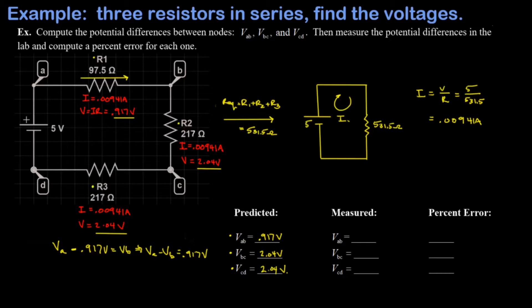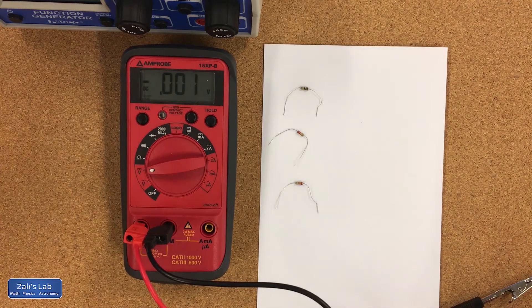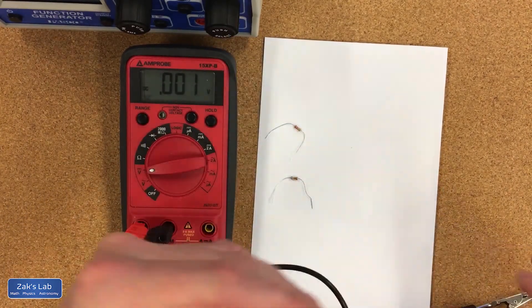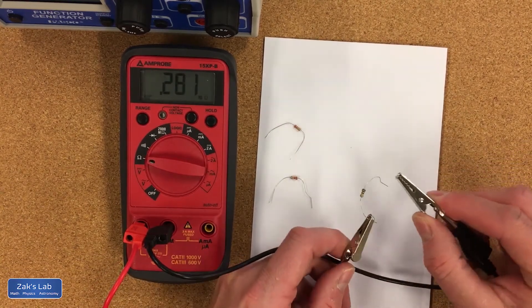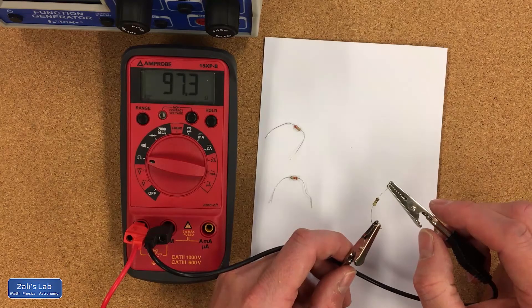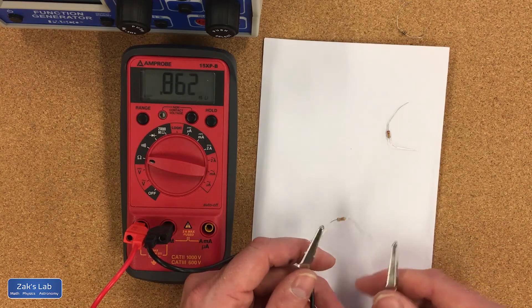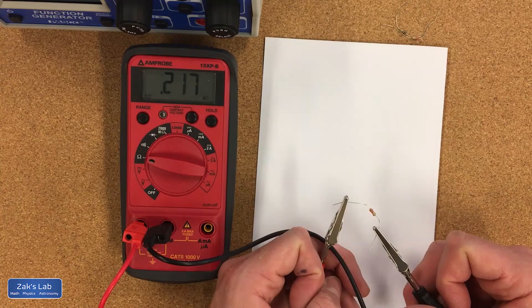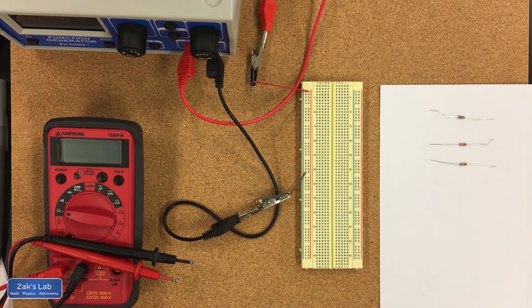Okay, so we need to measure the resistances of our resistors with the multimeter. All I do for this, I have two probes hooked up to the multimeter, I set it to ohms, and I'm just using alligator clips to clip on to the resistor. So my first one measures at 97.5 ohms, my second resistor measures at 217, and my third resistor measures at also 217 ohms.